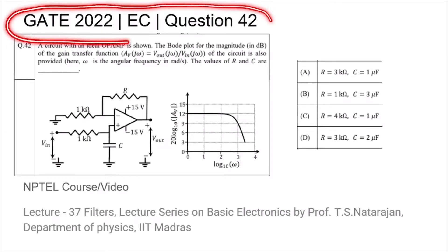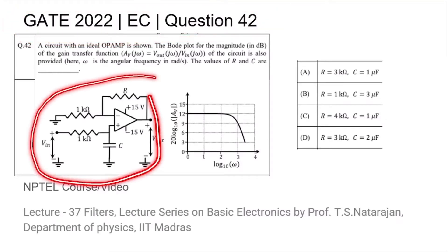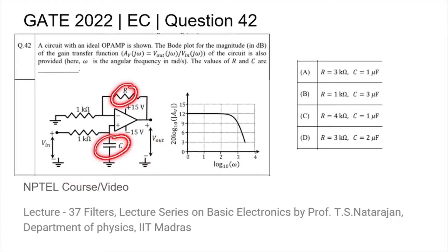This is question 42 from the GATE 2022 EC paper, where we are given the following op-amp filter and we are asked to find out what the value of R and C is based on its gain versus frequency plot.